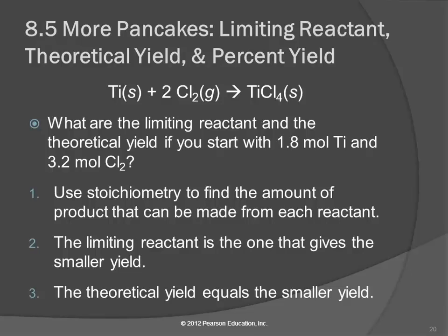The question is: what are the limiting reactant and the theoretical yield if you start with 1.8 moles of titanium and 3.2 moles of chlorine? The theoretical yield should be in moles. We're going to use stoichiometry — just moles to moles — to find the amount of product that can be made from each reactant, the same thing we did with the pancakes. The limiting reactant is the one that gives you the smaller yield, and the theoretical yield is that smaller yield.